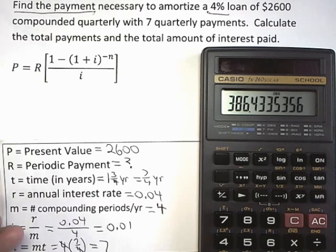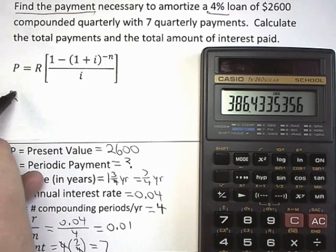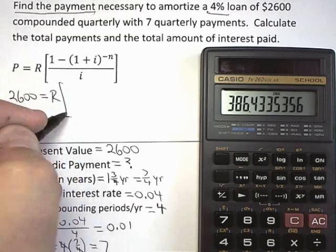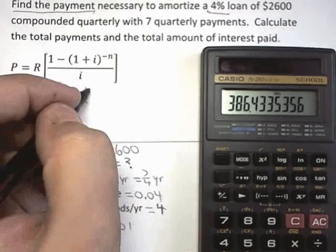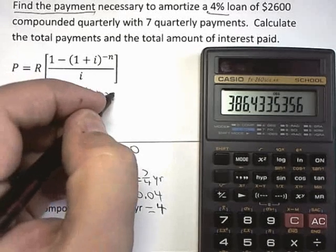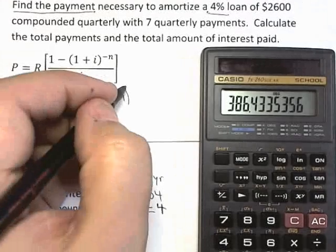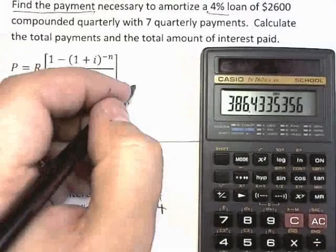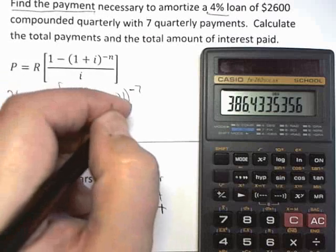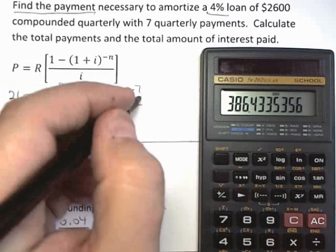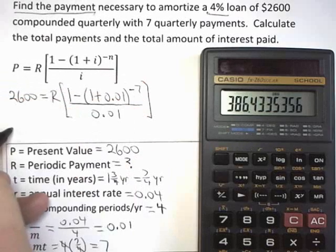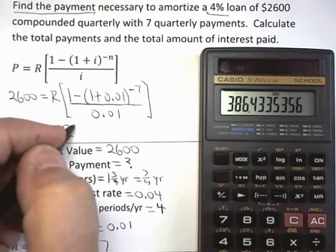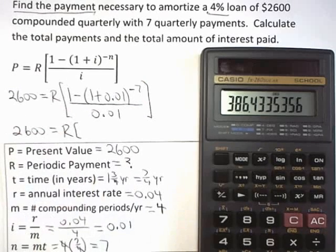Now it's simply a matter of plugging in the numbers and chugging away. So you got 2,600 for the present value. We're looking for capital R, 1 minus the quantity 1 plus little i, 0.01, raised to the negative n power. N is 7, and then that is divided by little i. So 2,600 equals capital R times. Now let's use the calculator.